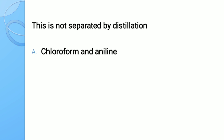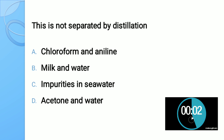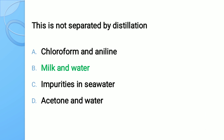Question number three: Which of the following is not separated by distillation? Options: A) chloroform and aniline, B) milk and water, C) impurities in sea water, D) acetone and water. The correct answer is milk and water — milk and water cannot be separated by the distillation process.